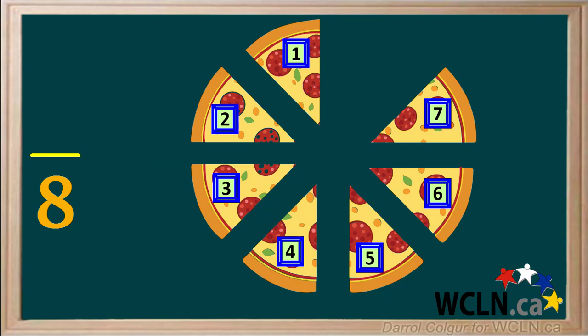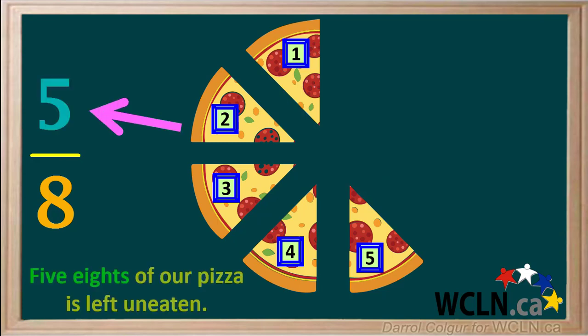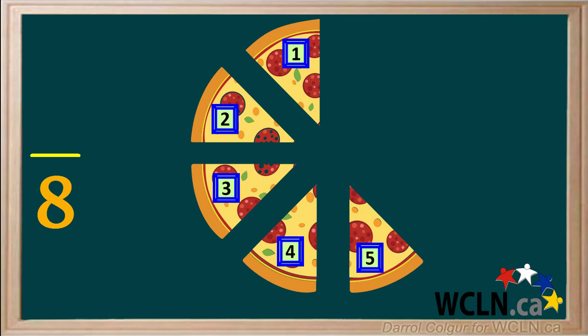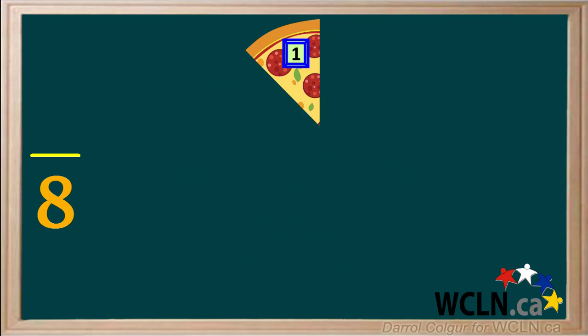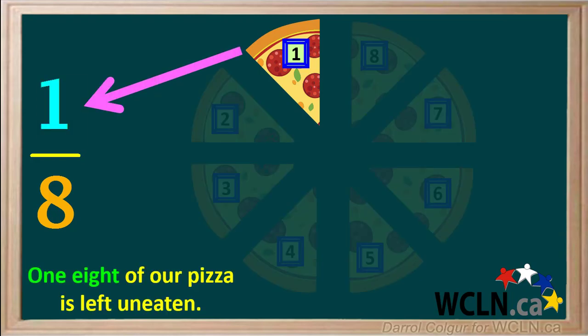Now someone eats two more pieces, so we can say that we now have five eighths of our pizza left uneaten. While we were talking about fractions, someone ate four more of the pieces, so now we have only one eighth of our pizza left uneaten.